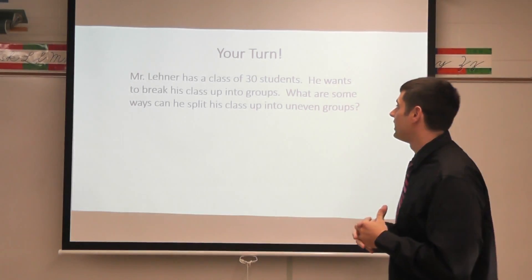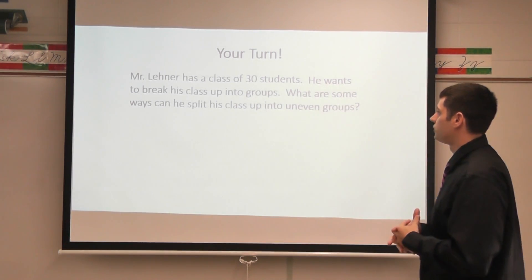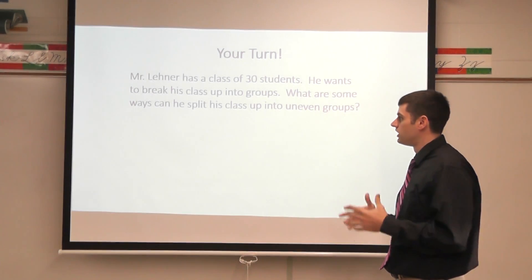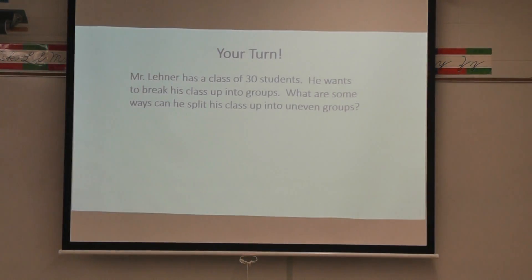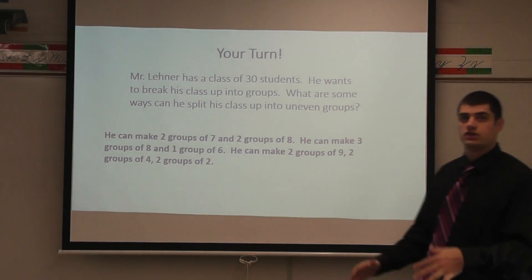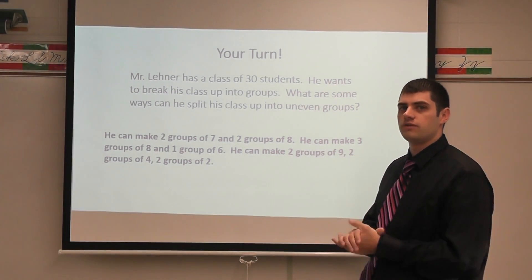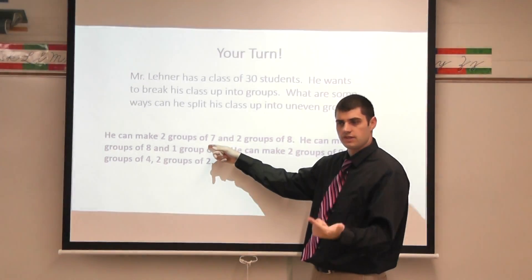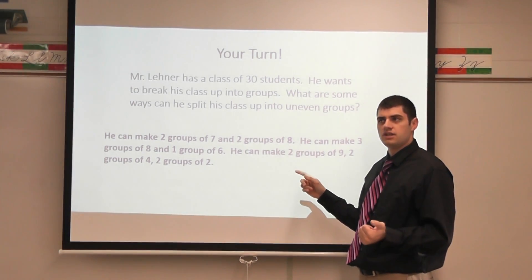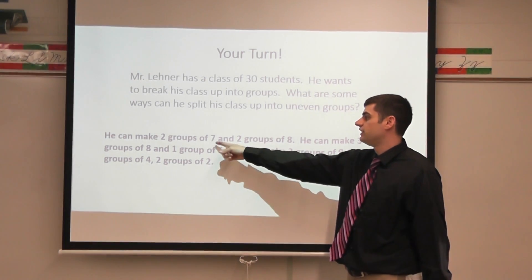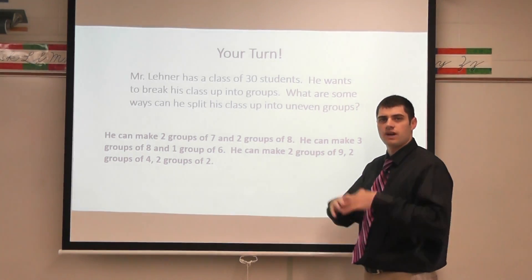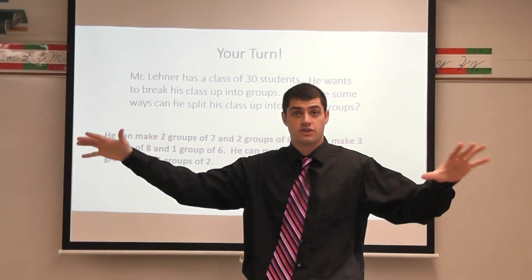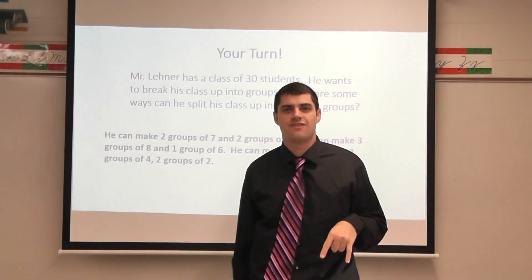Okay, now for this one there are many ways you can do this. In the first problem we did even groups; now we want to make some uneven groups. I'm just going to share a few that I came up with — you might have ones that are totally different and that's perfectly fine. I could have made two groups of seven — seven and seven is 14 — and two groups of eight — eight and eight is 16. So 16 plus 14 is 30 students. These groups have seven and these groups have eight, so it's uneven.